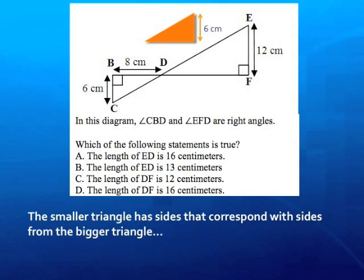Now we can more easily see how the 6cm side corresponds with the 12cm side. And we can also see how that 8cm side corresponds with that unlabeled side, DF, on the bigger triangle.